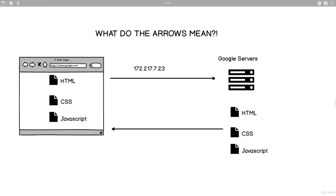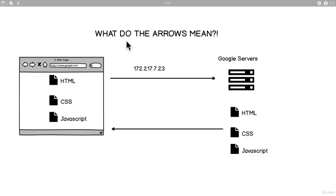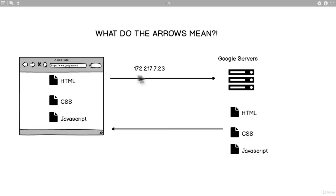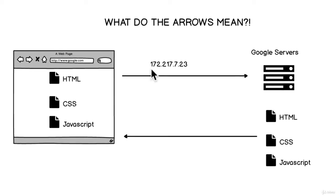We're going to be talking about the internet backbone. You recognize this because I've been talking about it for the last couple of lessons. But some of you may have had the question: what do the arrows mean? I just told you that we send off the IP address to the servers, the server responds with some files — but this is just magic. What do these arrows mean? So we're going to talk about that in this lesson.